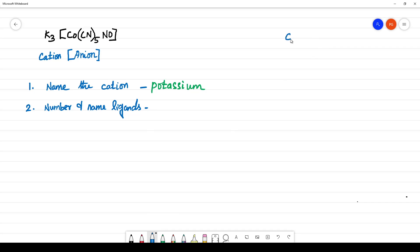You have cation and you have NO. What is CN? CN is cyanone. How many is there? It is 5. So it is pentacyanone. Next, what is NO? NO is nitrosyl. NO is nitrosyl.